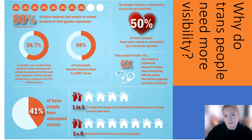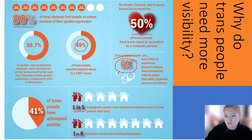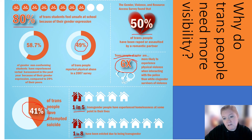80% of trans students feel unsafe at school because of their gender expression. 49% — nearly half — of trans people reported physical abuse. 50% have been raped or assaulted by a romantic partner. Trans people of color are six times more likely to experience physical violence when interacting with police. One in five transgender people have experienced homelessness, one in eight have been evicted, and 41% have attempted suicide. These are just some of the statistics.